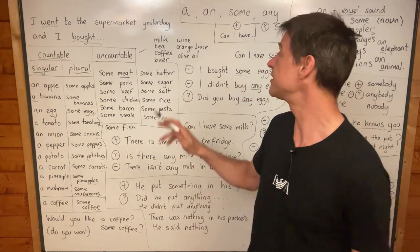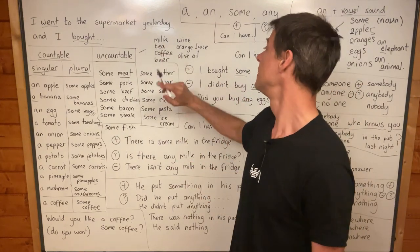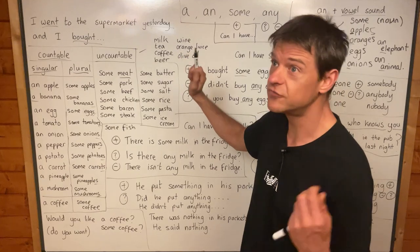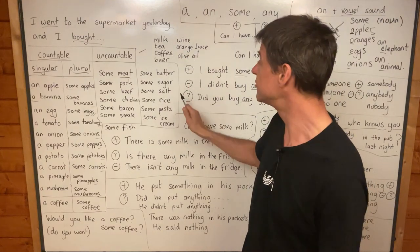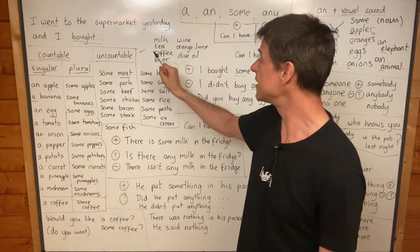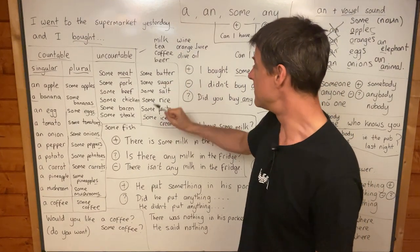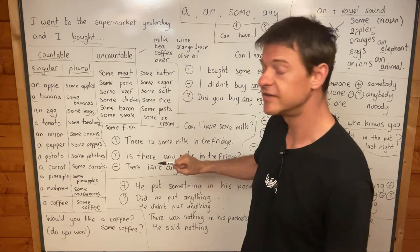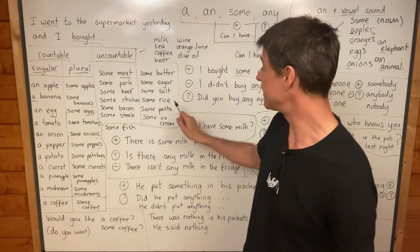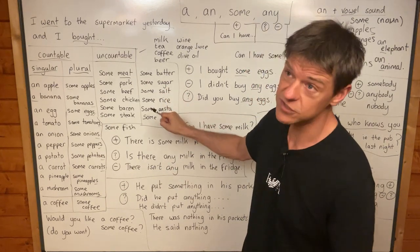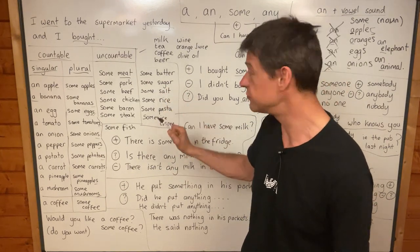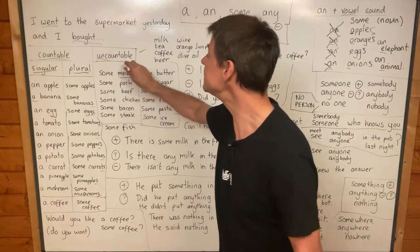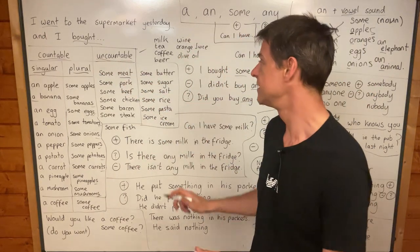We can't say one wine, two wines, three wines; one butter, two butters, three butters; one salt, two salts, three salts. These are uncountable nouns.